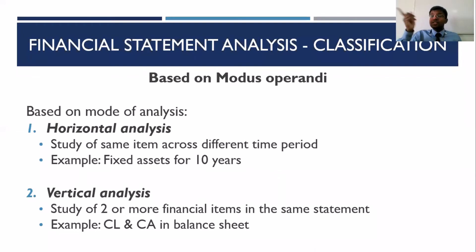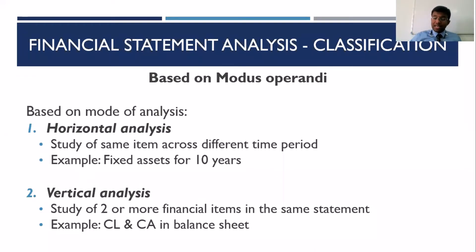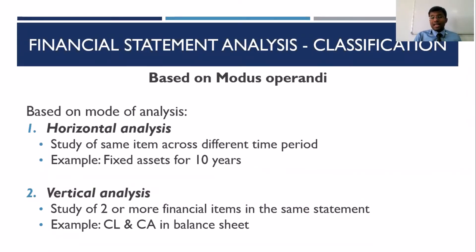To summarize: horizontal analysis involves the same item studied across different time intervals, while vertical analysis involves different items studied within the same time frame.